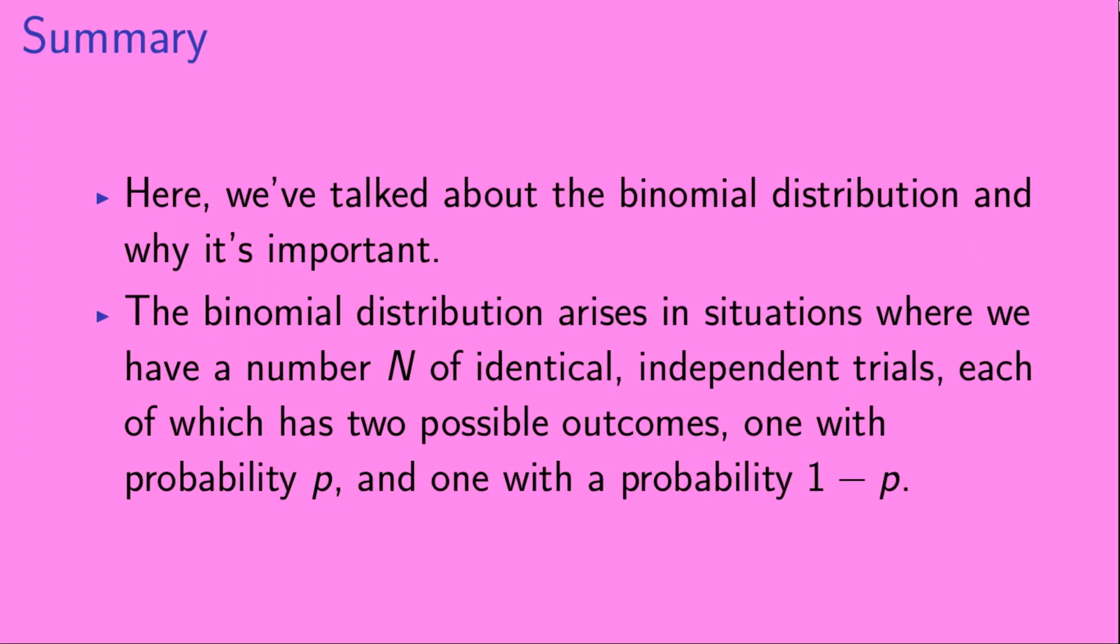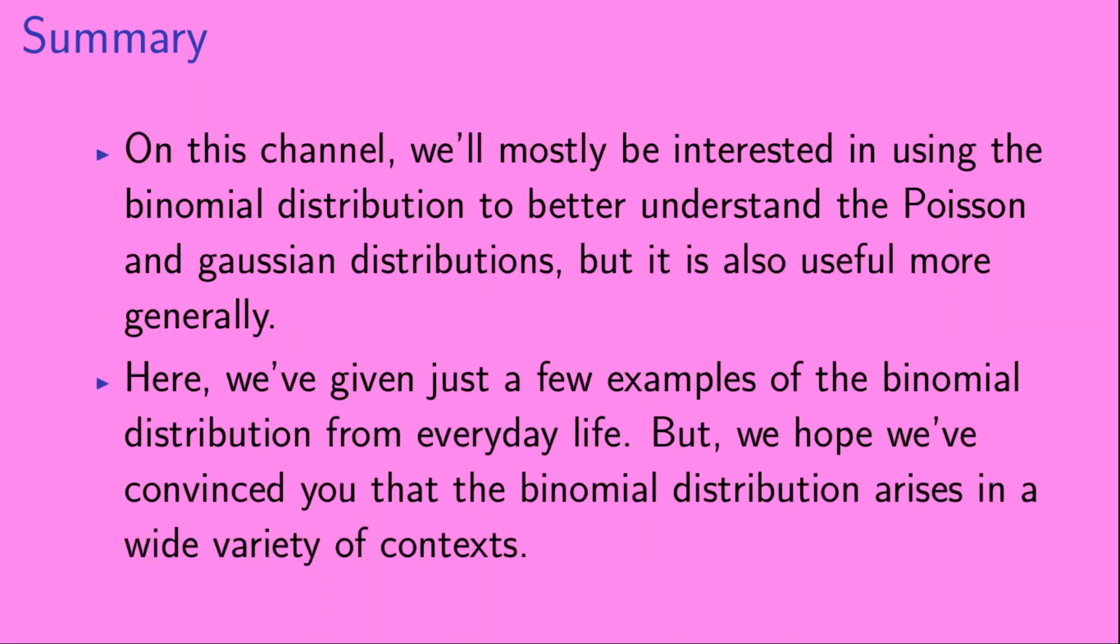Let's summarize. Here we've talked about the binomial distribution and why it's important. The binomial distribution arises in situations where we have a number n of identical independent trials, each of which has two possible outcomes, one with probability p and one with probability 1-p. On this channel, we'll mostly be interested in using the binomial distribution to better understand the Poisson and Gaussian distributions, but it is also useful more generally. Here we've given just a few examples of the binomial distribution from everyday life, but we hope we've convinced you that the binomial distribution arises in a wide variety of contexts.